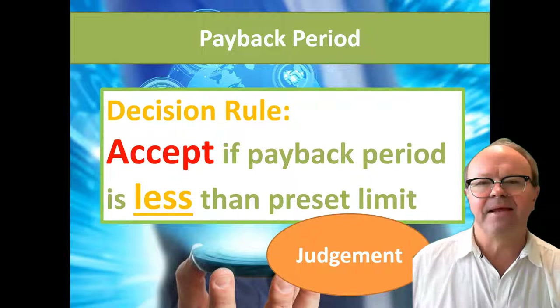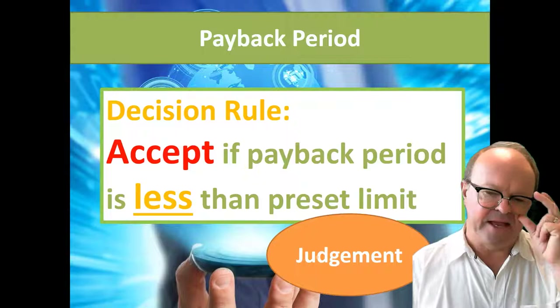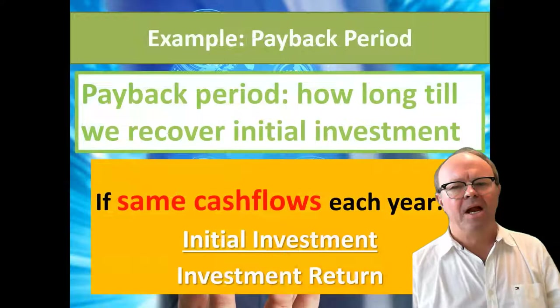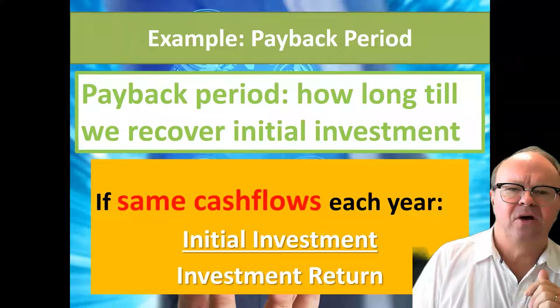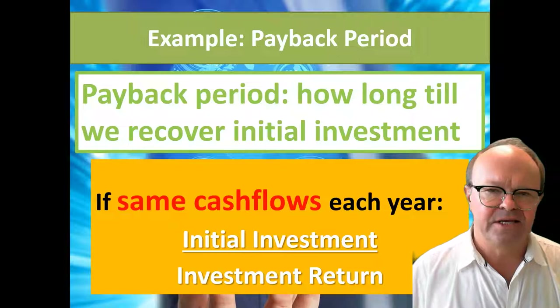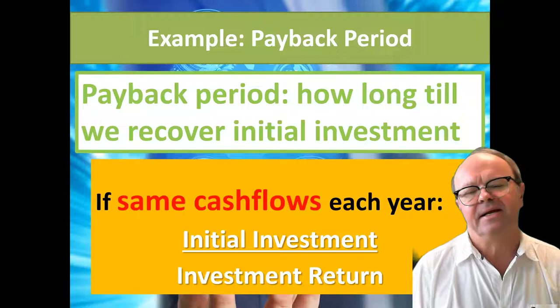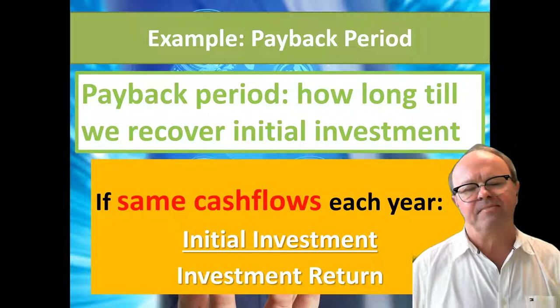We estimate the cash flows each period and subtract them from the initial cost until they equal the initial cost. We can calculate to the day, month, or year when the cash flows will equal the initial investment. It's a break-even type of measure — when do we break even on the capital investment? The decision rule is: accept the investment if the payback period is less than a preset limit. We might say we don't want investments that take 10 years to get the money back — we want it in five years. If they're the same cash flows each year, we simply divide the initial investment by the annual return.